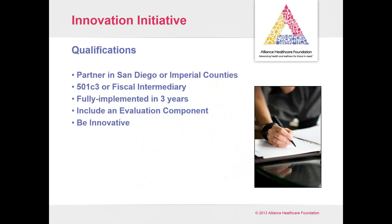Some of the basic qualifications: you need to either be a 501(c)(3) in San Diego or Imperial counties, or work through a fiscal intermediary that is a 501(c)(3). If you're outside of the two counties, you need to partner with an organization in San Diego or Imperial counties. We like to see these projects fully implemented in three years — though the CIE got into implementation in that third year but required more funding to scale it. So there's always that potential for going beyond three years.